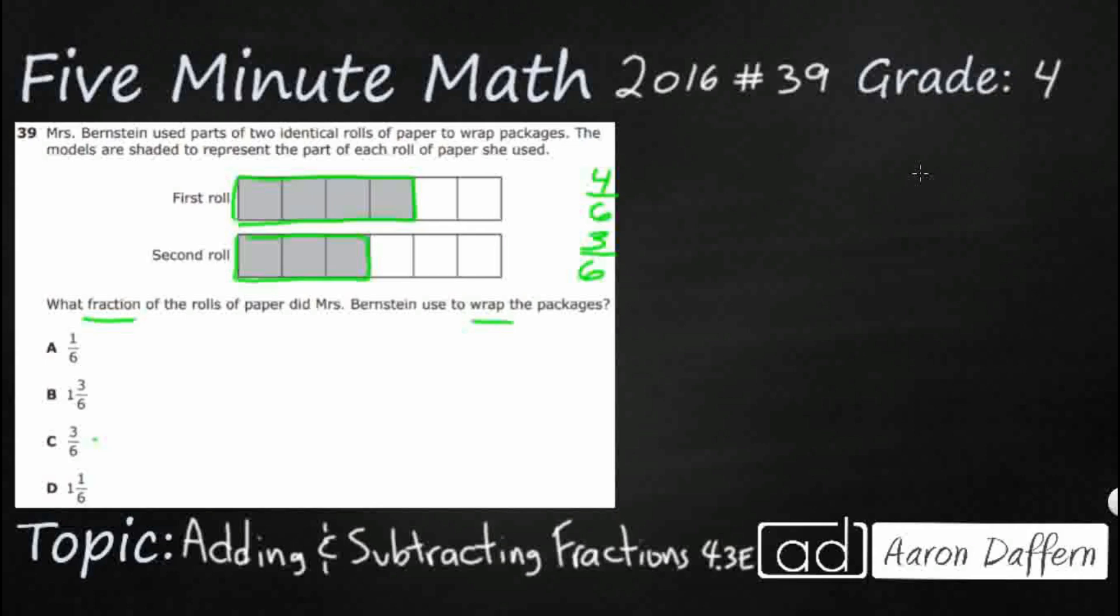Well if we're using both of them, if she used this part right here and she used this part, looks like what we have is we have a part-part-whole. So we can even look at a part-part-whole strip diagram if we really wanted to, to kind of give us a nice picture of what we should be doing here. So for one of the rolls she used 4/6. For the other she used 3/6. So my question is, how much of the rolls did she use?